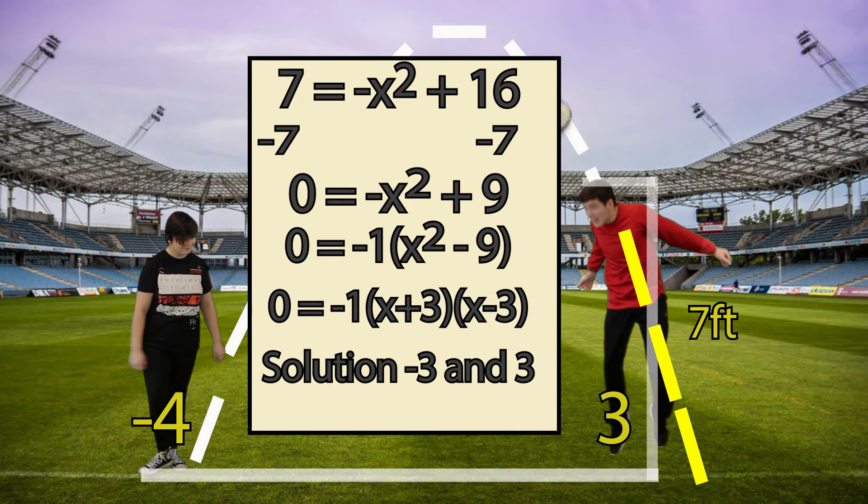So the answer to our story problem of the day is that if Desmond is at negative 4 feet and Cooper is at positive 3 feet, then they must be 7 feet away.